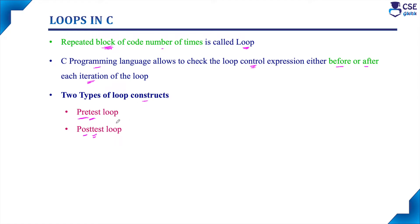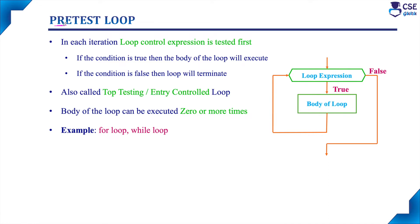Now we will discuss each one in detail. In a pre-test loop, the loop control expression will be tested first in each iteration. If the condition is true, the body of the loop will execute. If the condition is false, the loop will terminate without executing the body of the loop — that is, if the control expression is false from the very beginning, the body of the loop will not execute at all. Here is the flowchart for the pre-test loop. The variable will be initialized and the loop expression will be specified, then the loop expression will be evaluated.